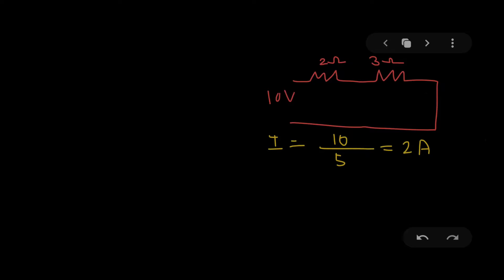The circuit current is 2 ampere. In a series circuit, the source current is equal to the current across any of the given resistors. The current across 2Ω is the same as across 3Ω and any other resistor connected in series. So I can safely say that the current across the 2Ω resistor equals the source current. To calculate P across 2Ω: I²R = 2² × 2 = 8 watts.